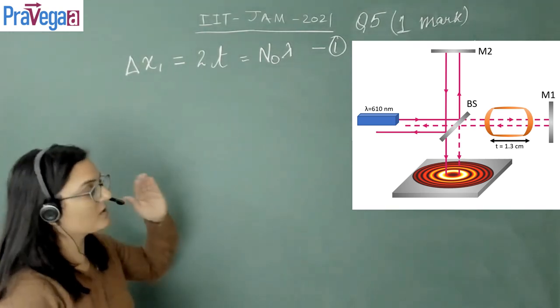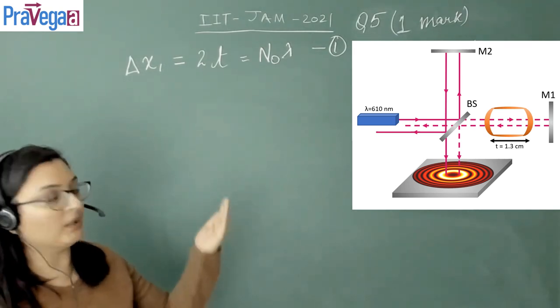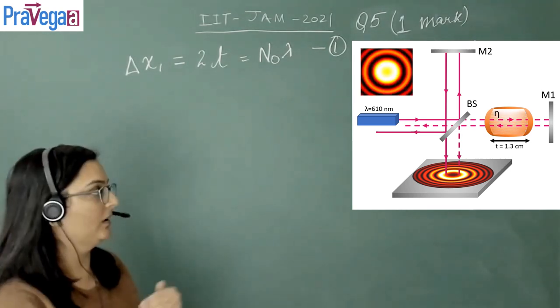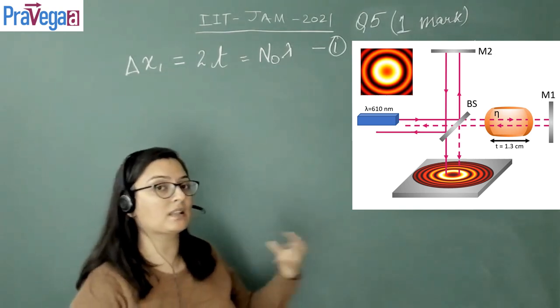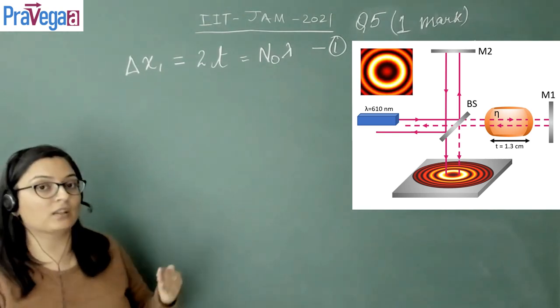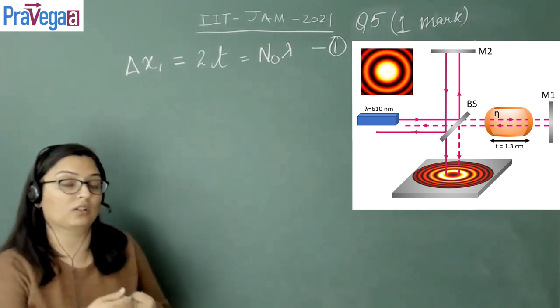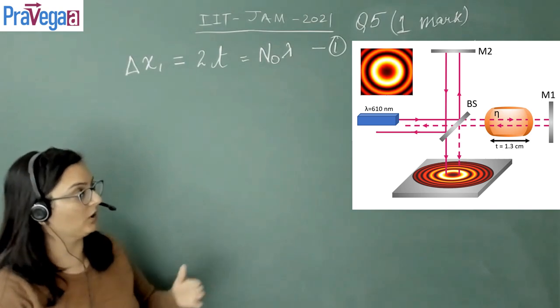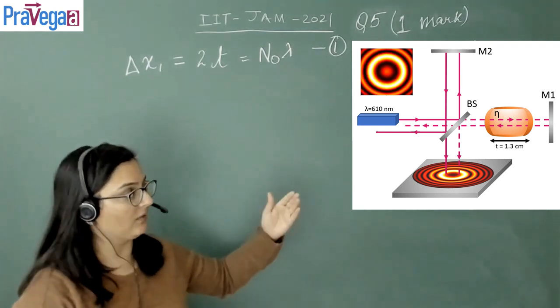Now this cavity is being filled with a medium of refractive index eta. Please note that as soon as the medium is filled, we can see a change in the fringes happening. We can see the evolution of fringes. It is given that when this medium is introduced, the observer observes or counts the number of fringes which are being collapsed, and that number is 472. This is given in the question.